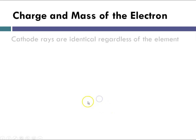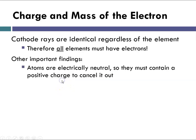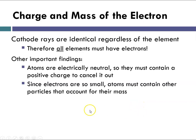The cathode rays were identical regardless of the element — something Thomson noticed by repeating his experiment — so he concluded that all elements must have electrons. He also noted that atoms are electrically neutral, meaning there must be some positive charge somewhere to cancel out the negative. And since electrons are so small, atoms must have something else that accounts for the mass we observe.